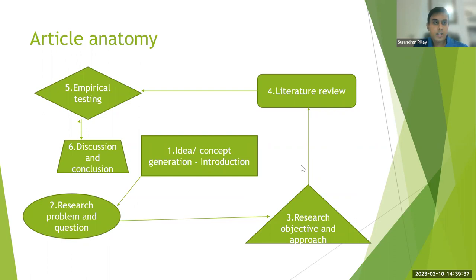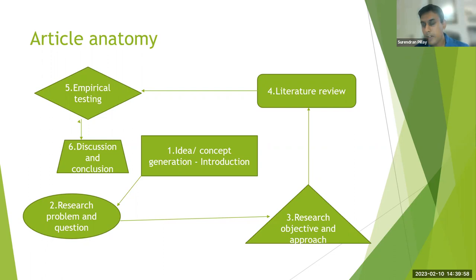To give context on what an article is: articles range from 5 to 30 pages depending on the journal's specific criteria. In generic terms, there's always a concept or idea generation which forms an introduction, and this concept generation is probably one of the most important parts of the article — getting an idea that's technically valid and has research relevance is your first major breakthrough.